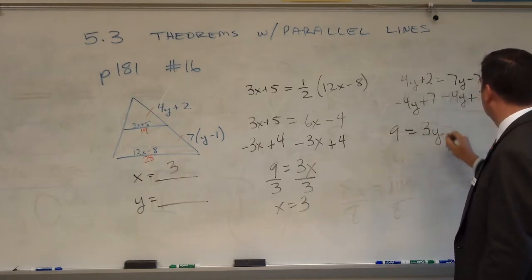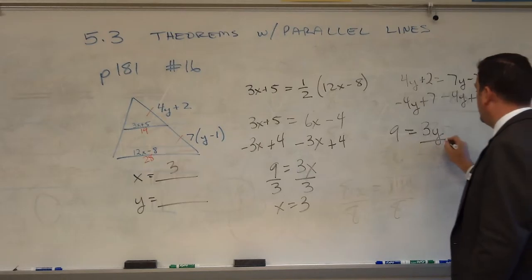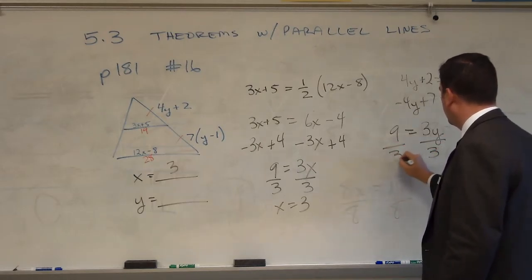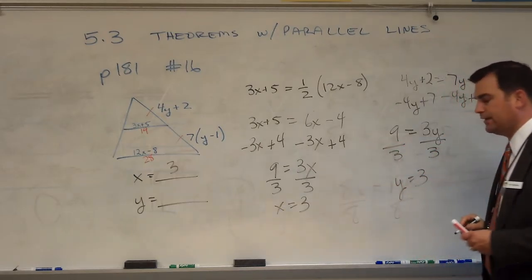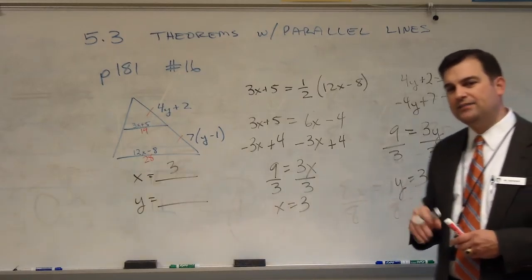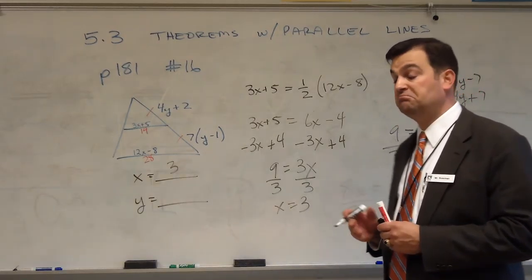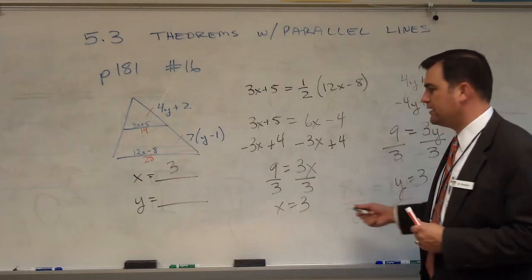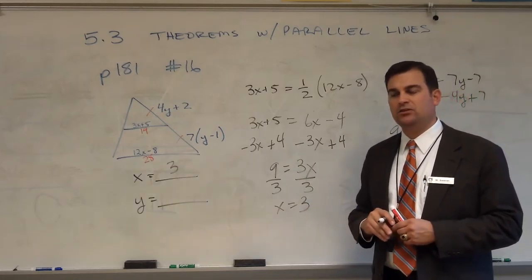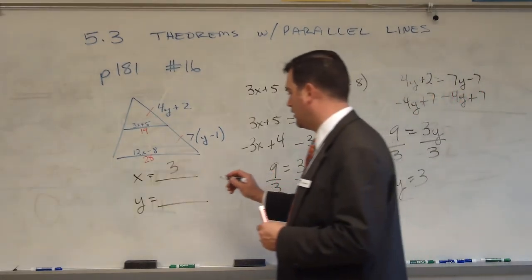I'm going to add 7 to both sides, subtract 4y from both sides, and I have 9 equals 3y. Divide by 3 on both sides, and I solve that y also equals 3.